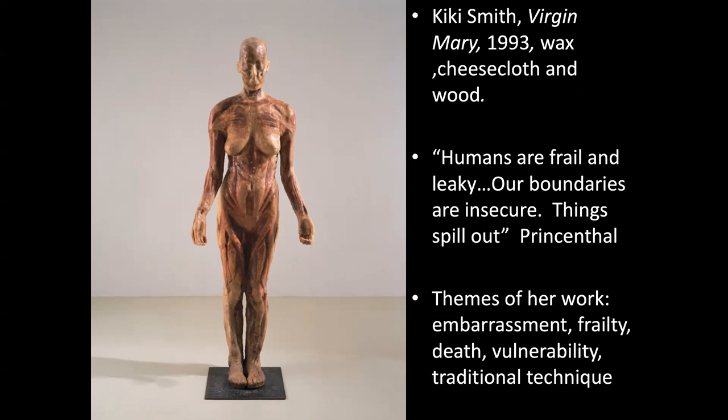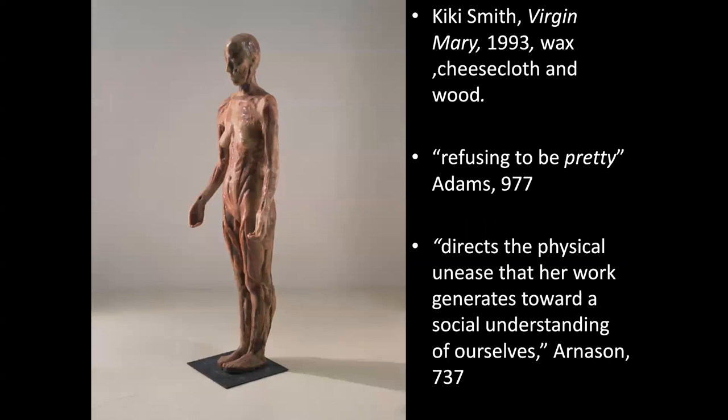She also likes to use traditional technique, so when you see her pieces, they look like sculptures shaped like humans. She'll often use molds made either on humans themselves — sometimes herself, as we'll see in the video — or mold sculptures made in a traditional way. But as you can see with the materials on this one — wax, cheesecloth, and wood — the materials are untraditional. Adam says that Kiki Smith is refusing to be pretty with her work, and I really agree with that.